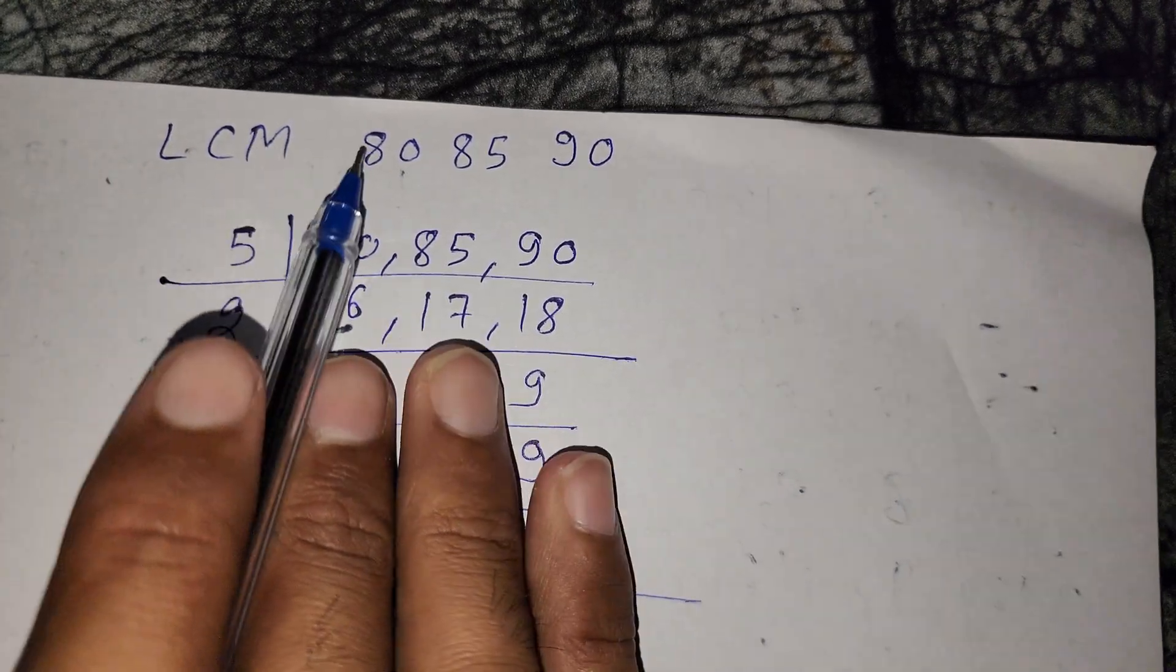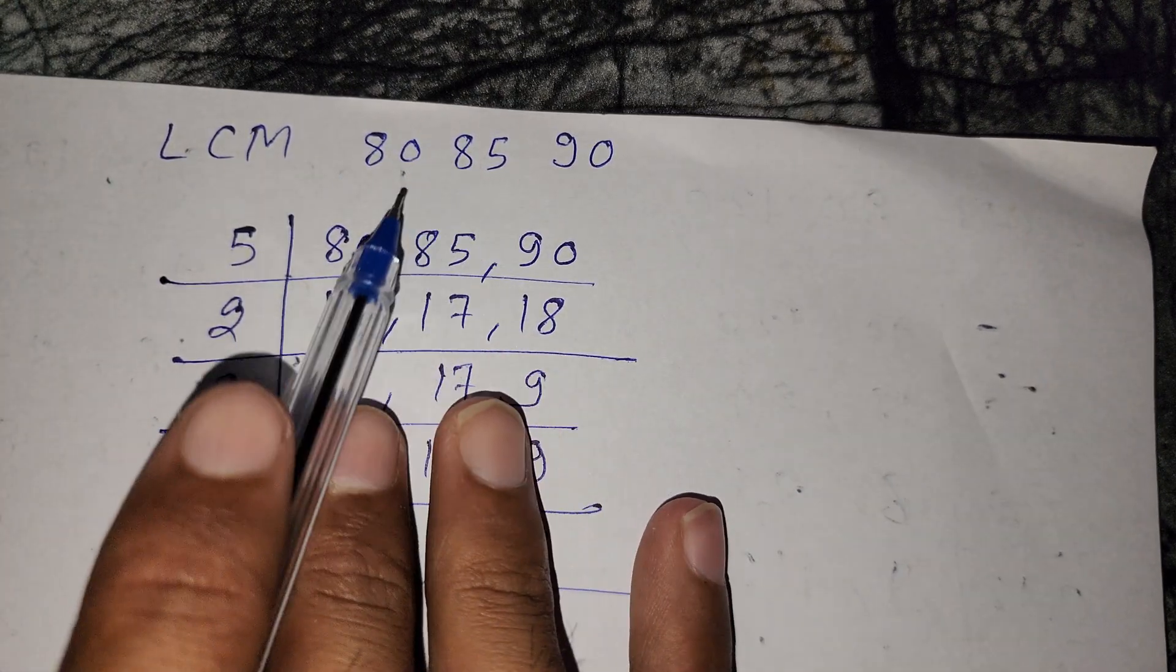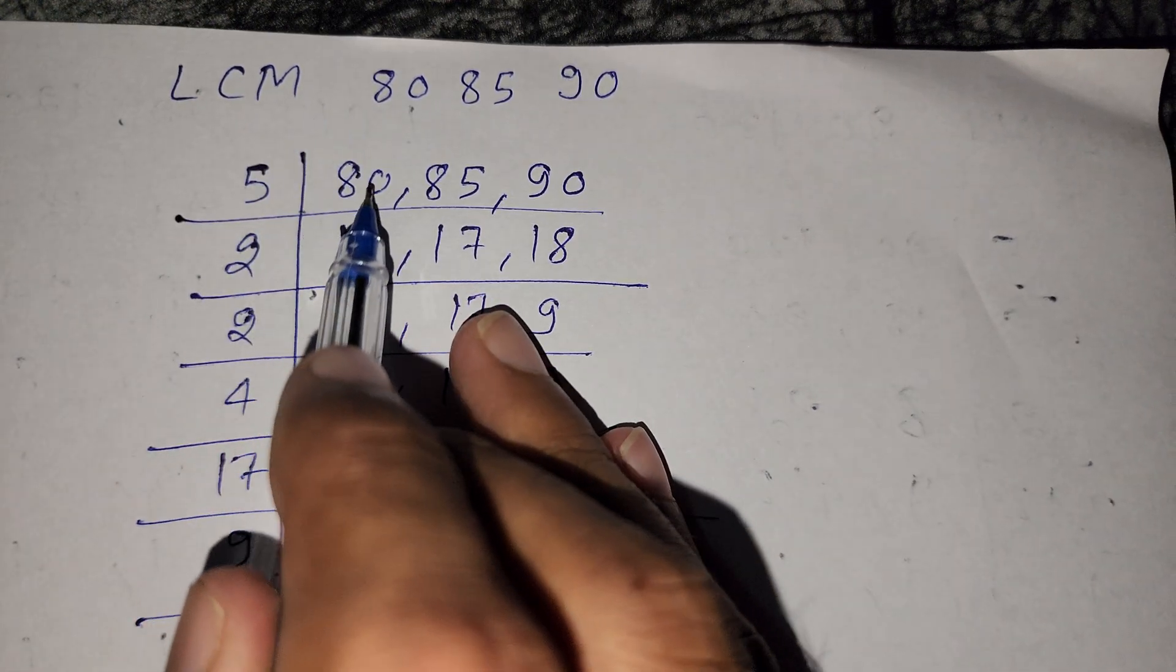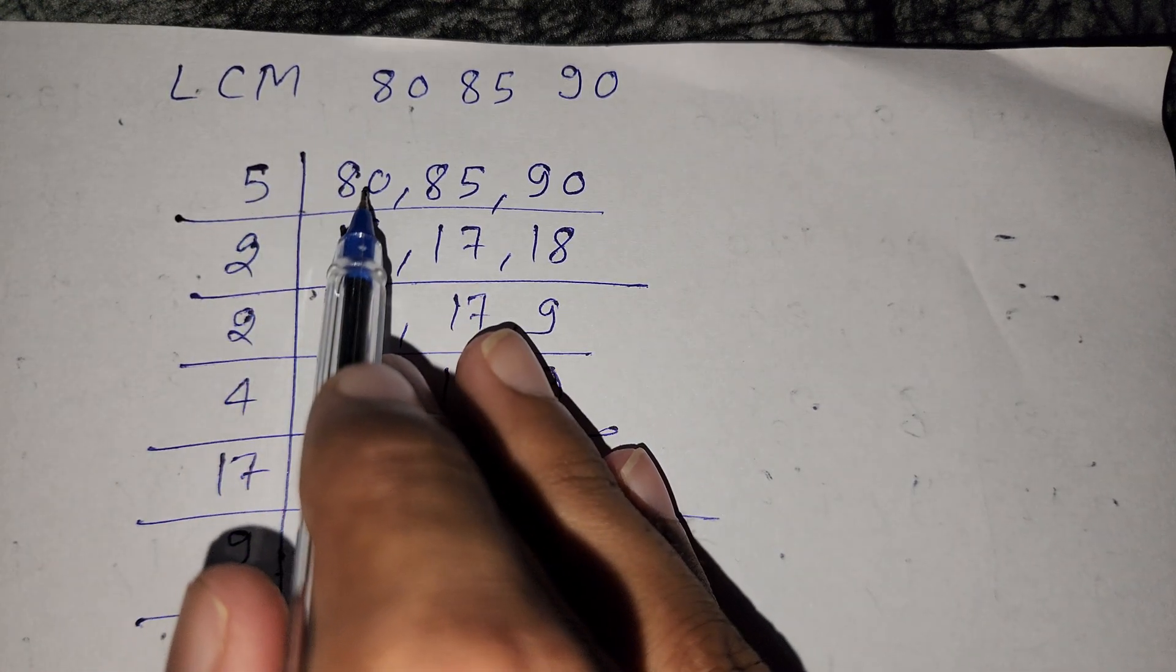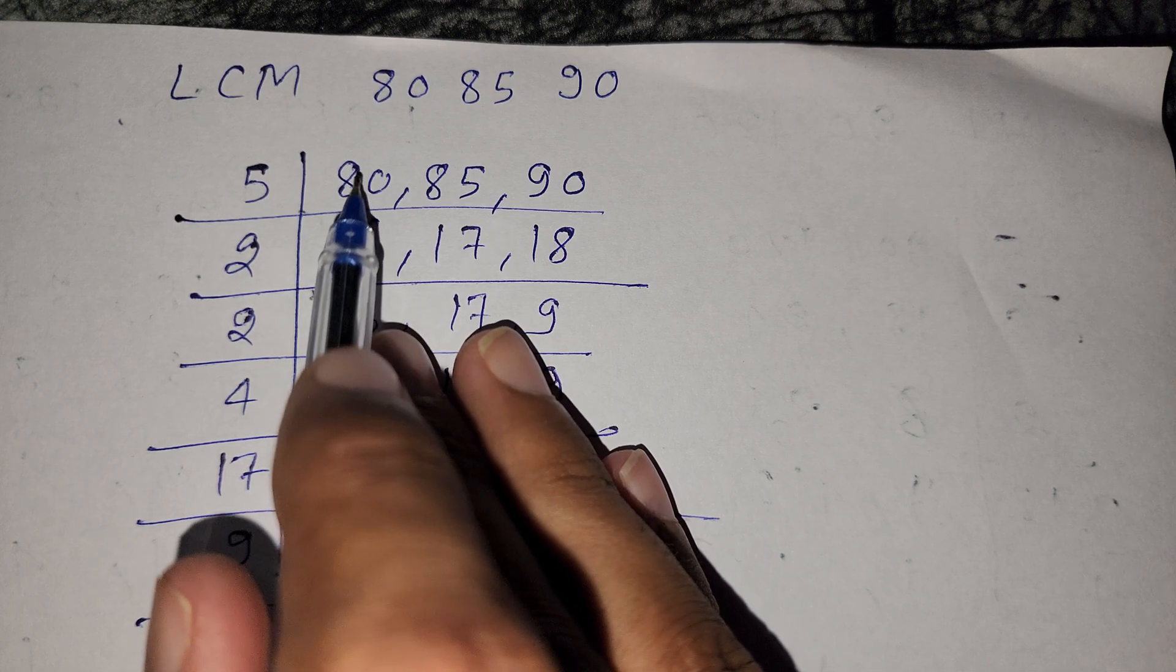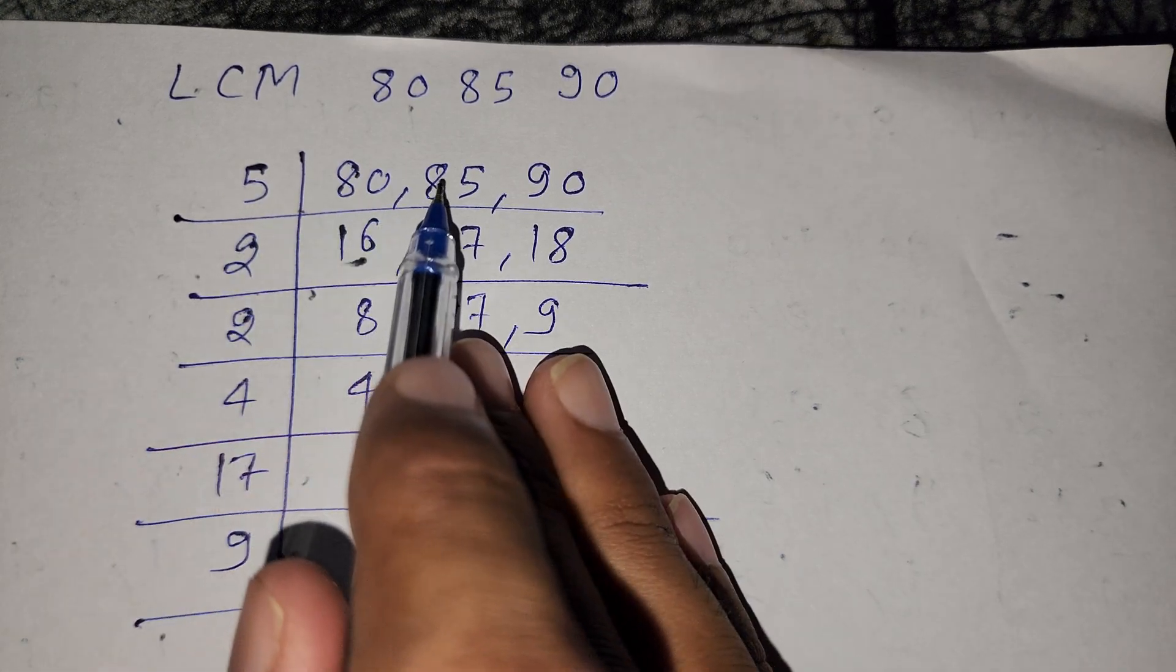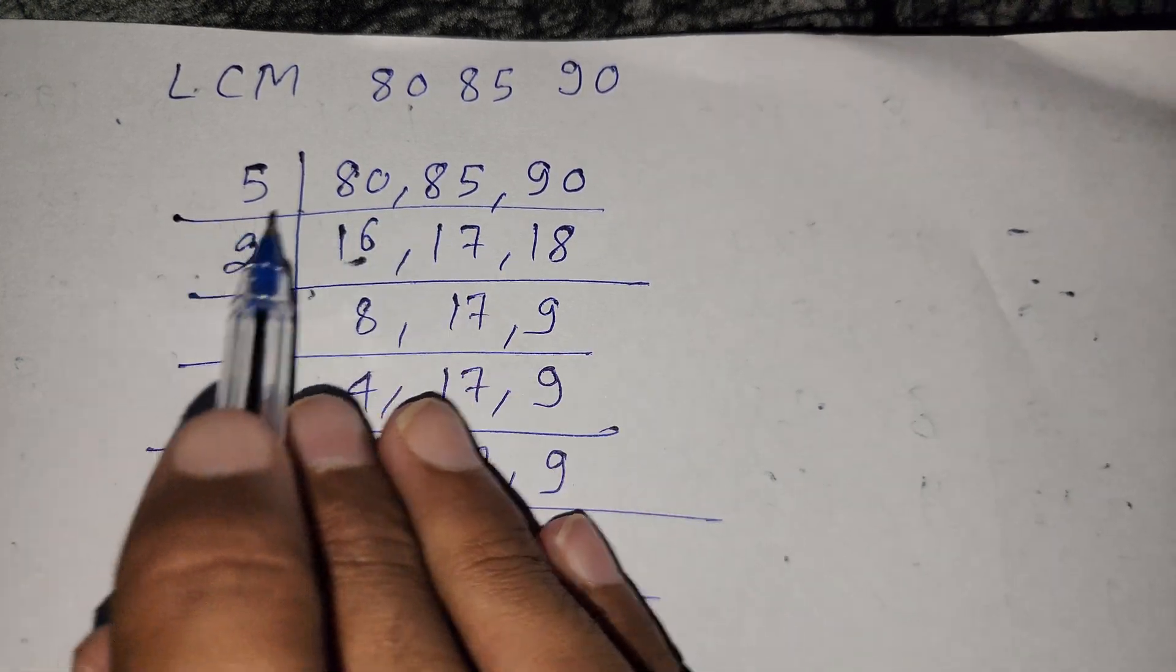In this video we find the LCM of 80, 85, and 90. First we divide by 5. 80 divided by 5 is 16, 85 divided by 5 is 17, and 90 divided by 5 is 18.